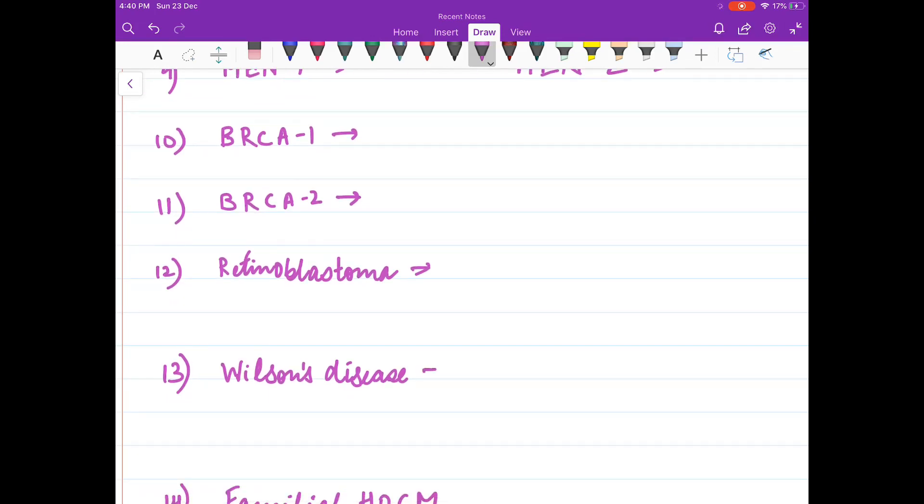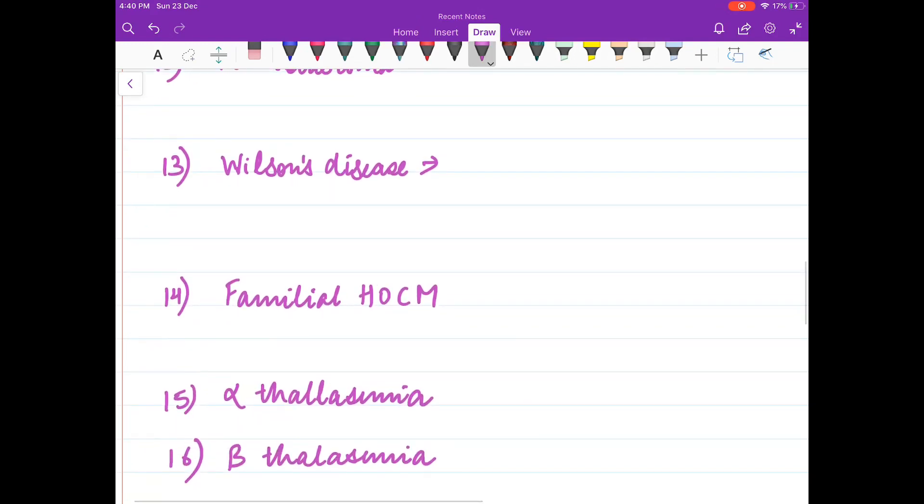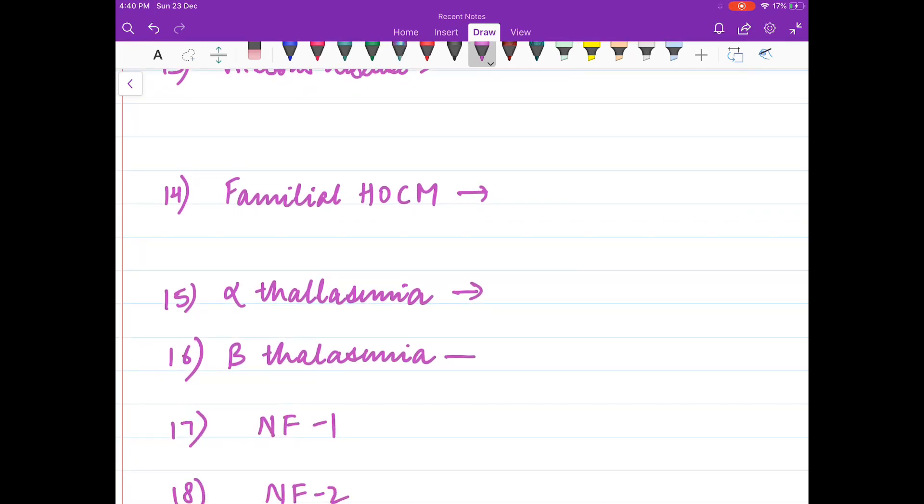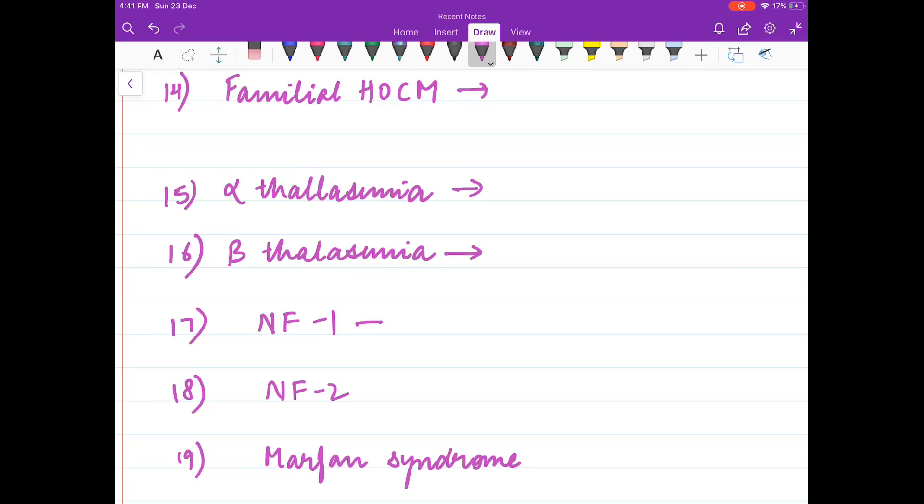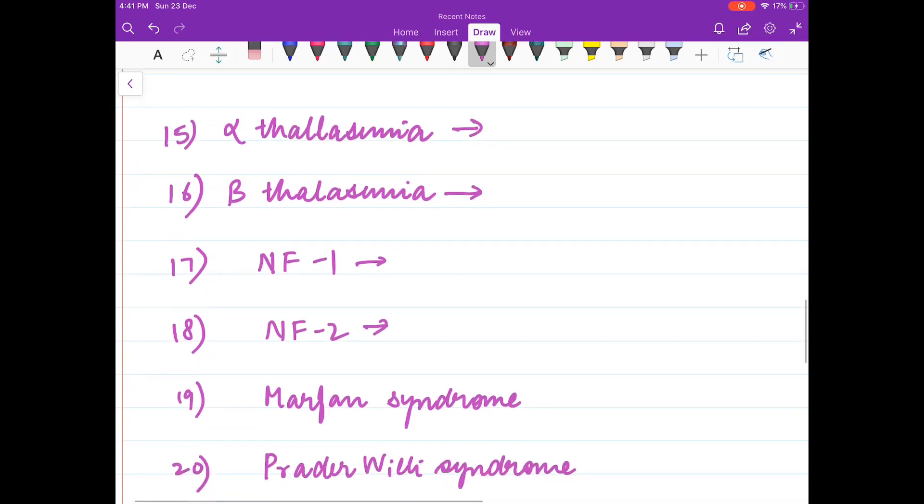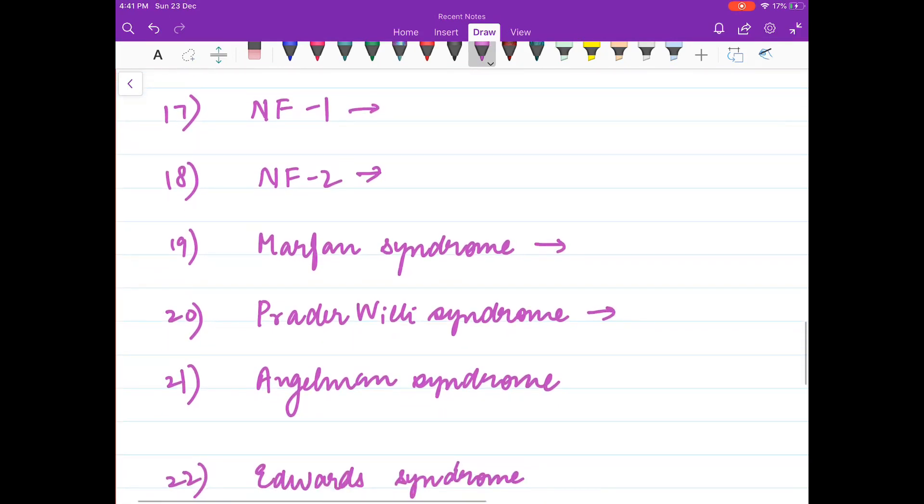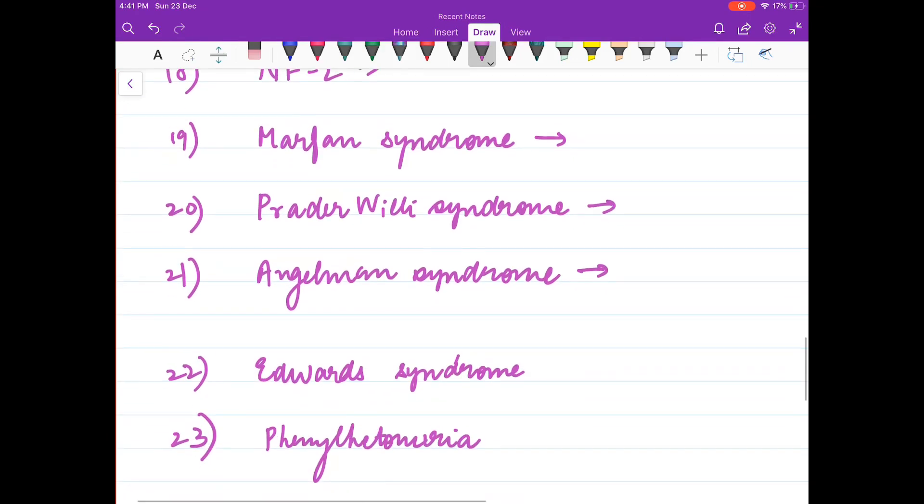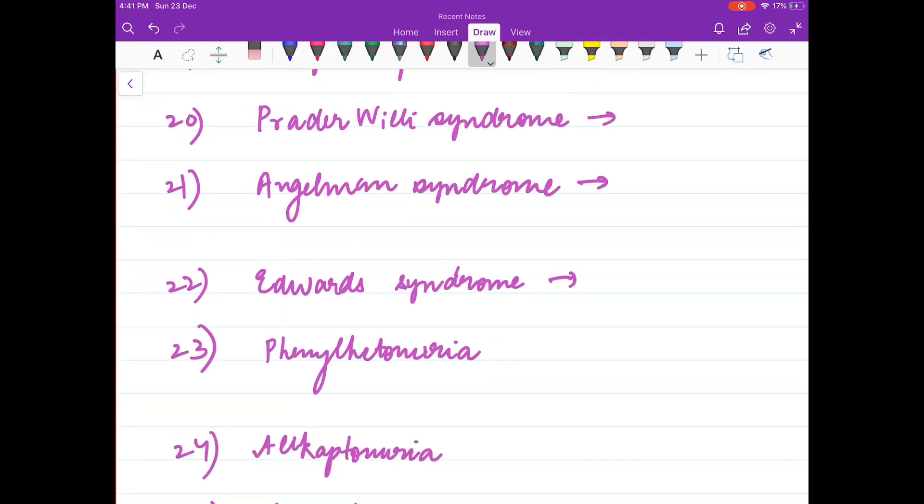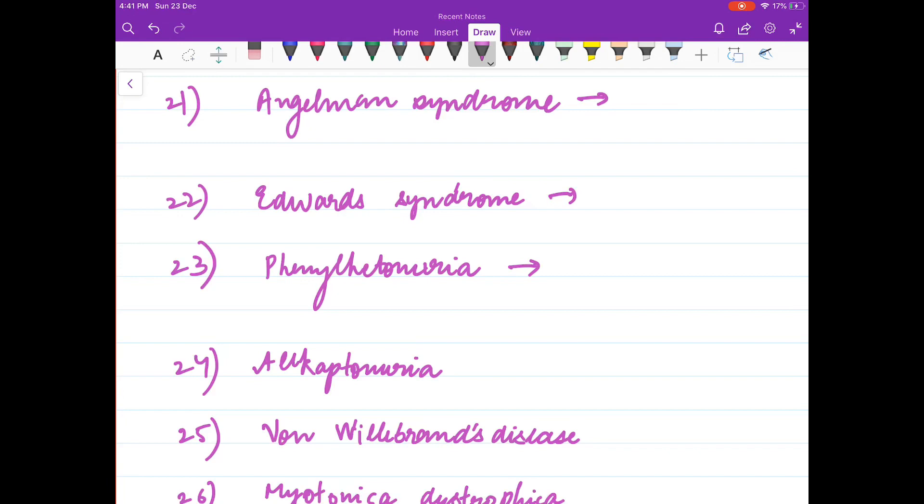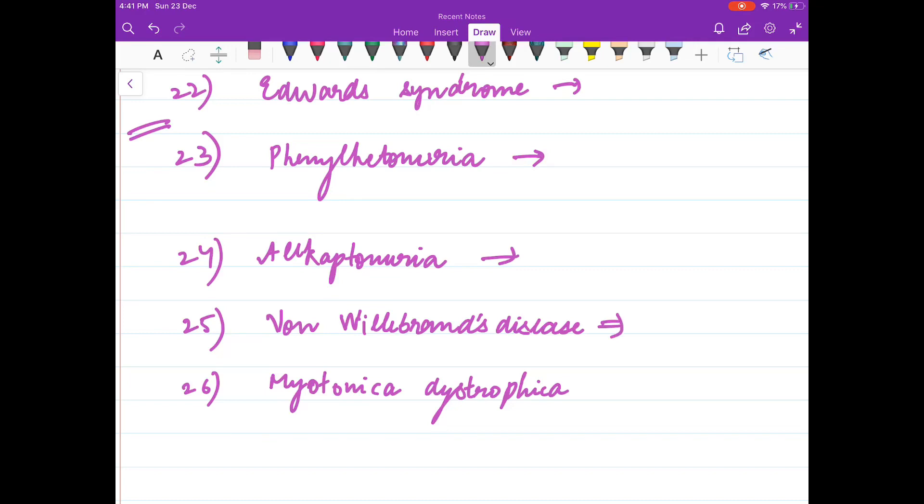H antigen is present on chromosome? HLA? Cystic fibrosis? Familial adenomatous polyposis? Retinoblastoma, Wilson's disease, familial HCM, alpha thalassemia, beta thalassemia, NF1, Neurofibromatosis 2, Marfan syndrome, Prader-Willi syndrome, Angelman syndrome, Edwards syndrome, Phenylketonuria, Alkaptonuria, Von Willebrand disease, Myotonic dystrophy?